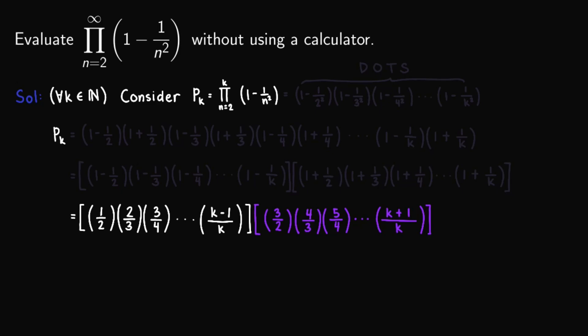And so given this one, let us now cancel certain terms. Focusing on this group first, we can cancel out the twos, the threes, the fours, and so on until the k minus 1's. So the idea here is that the denominator of the first term cancels with the numerator of the next term. So if we repeat that one, we can cancel until the k minus 1 out here.